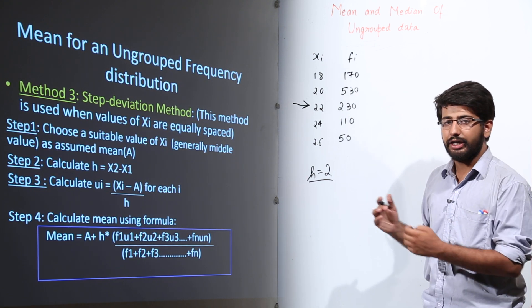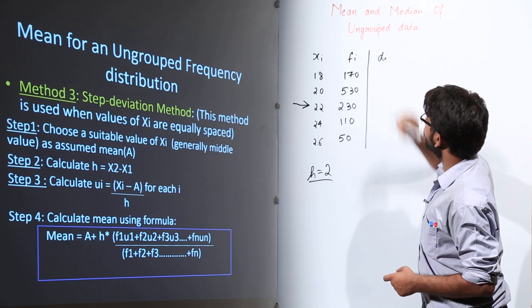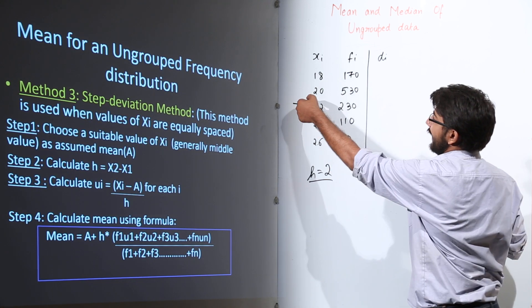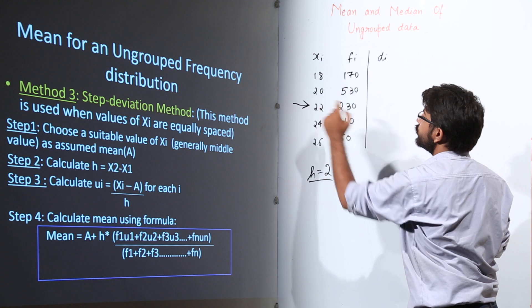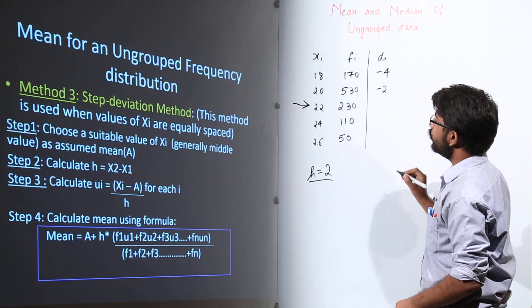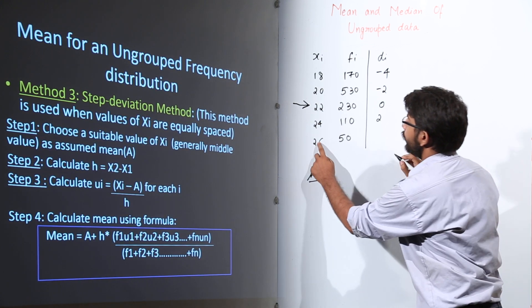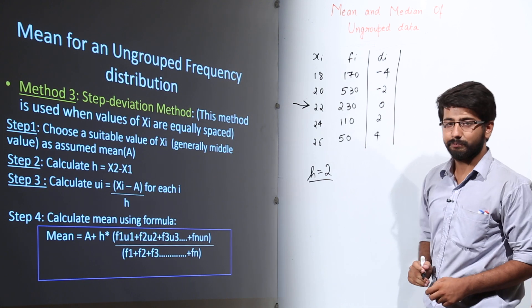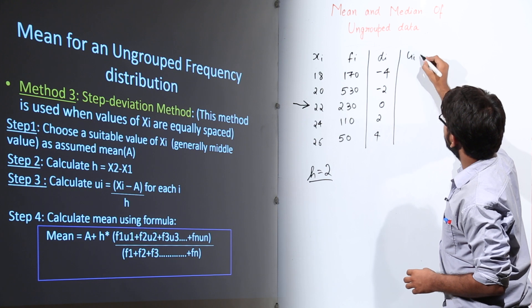Now calculate DI = XI − A. So: 18 − 22 = −4, 20 − 22 = −2, 22 − 22 = 0, 24 − 22 = 2, and 26 − 22 = 4. These are the values of DI.